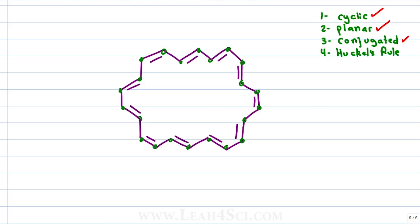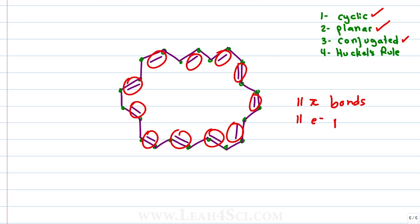Instead of doing the math or counting the electrons, let's keep it simple by counting the number of pi bonds. 1, 2, 3, 4, 5, 6, 7, 8, 9, 10, 11. We have 11 pi bonds or you can think of it as 11 electron pairs.